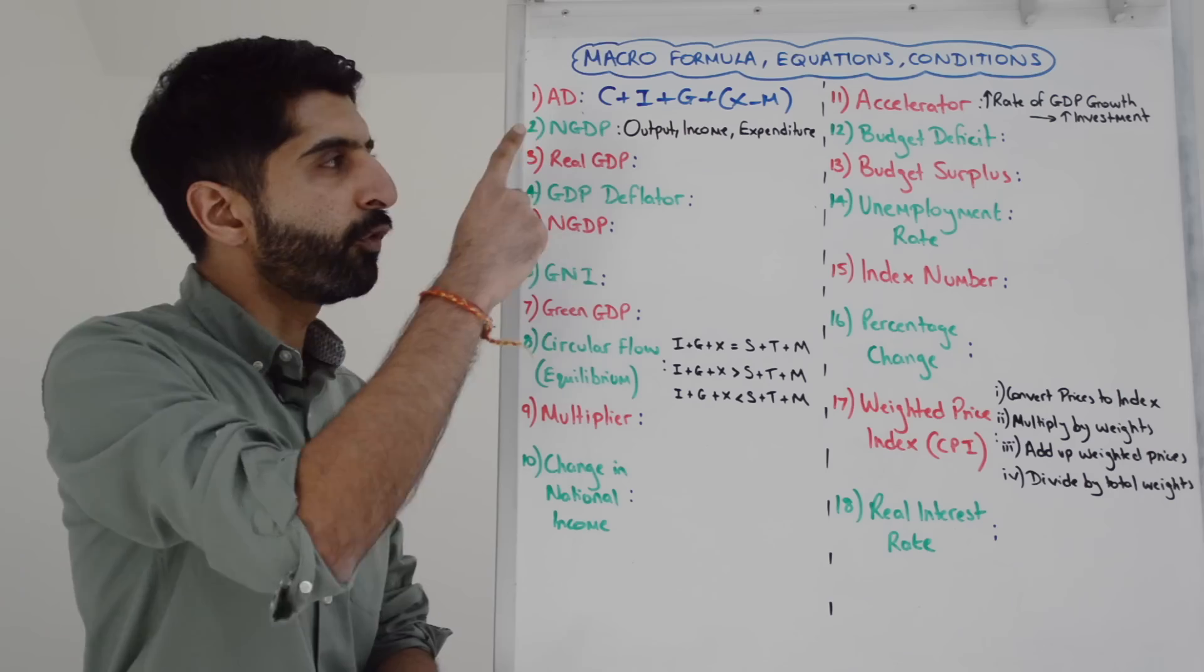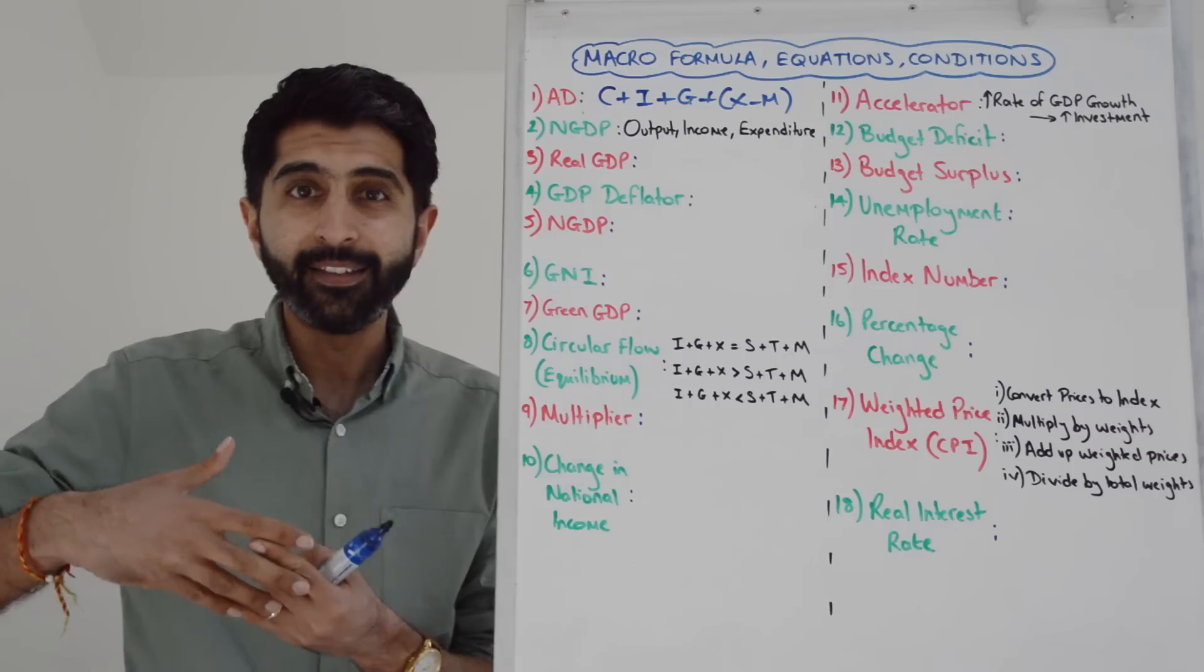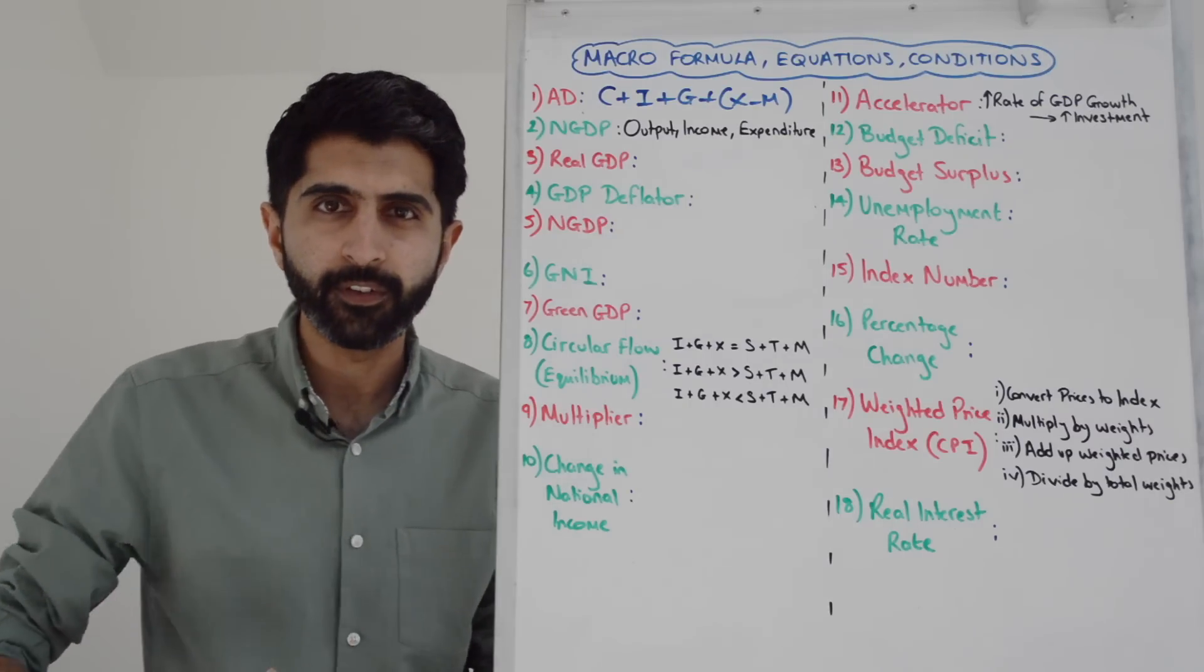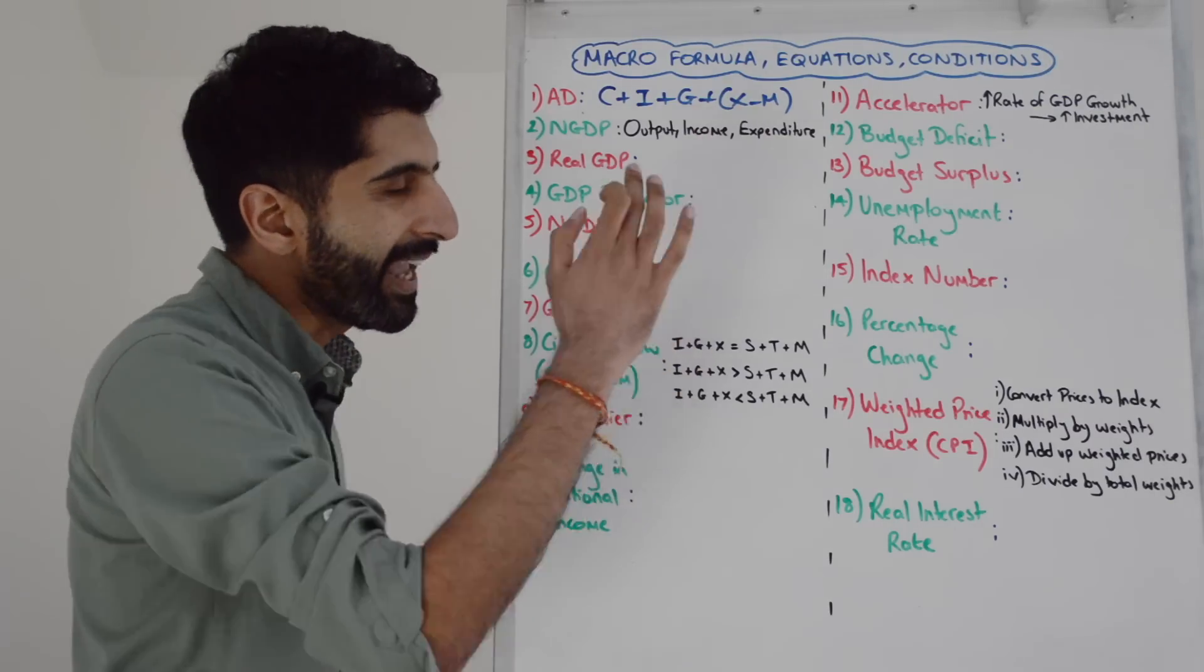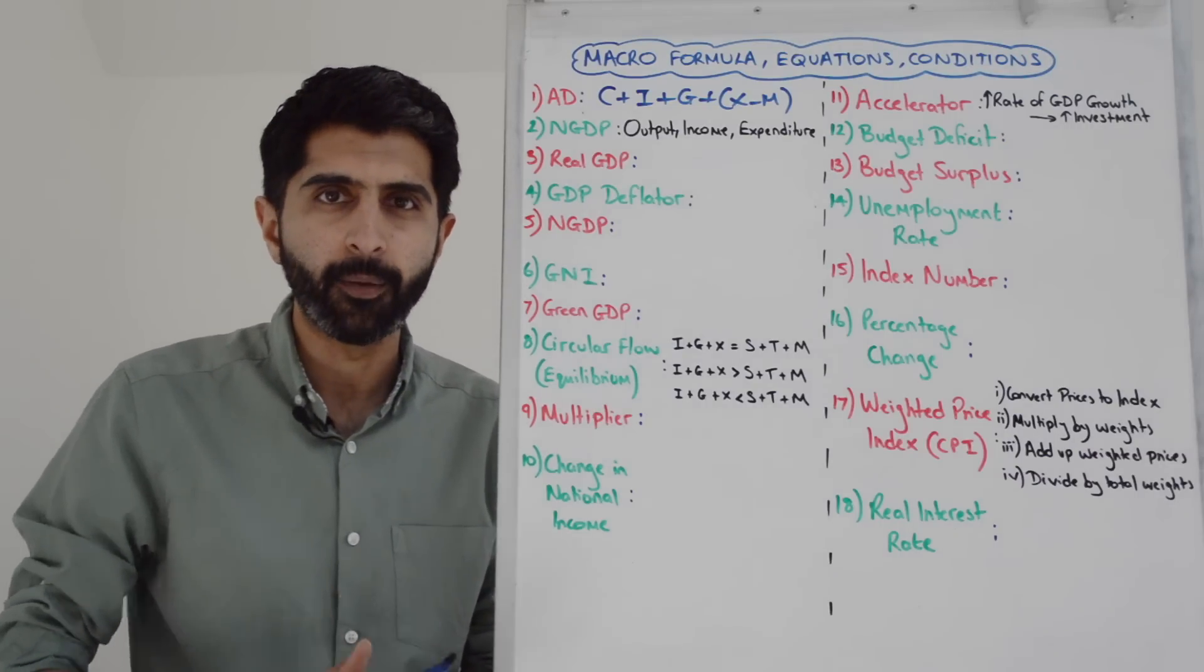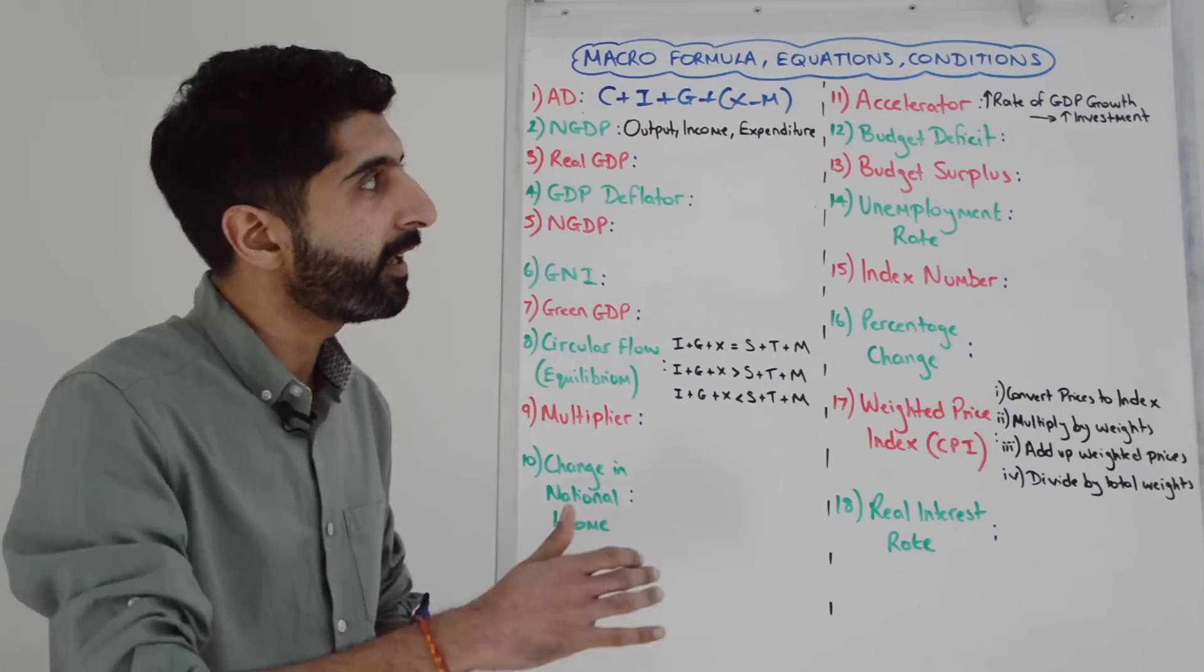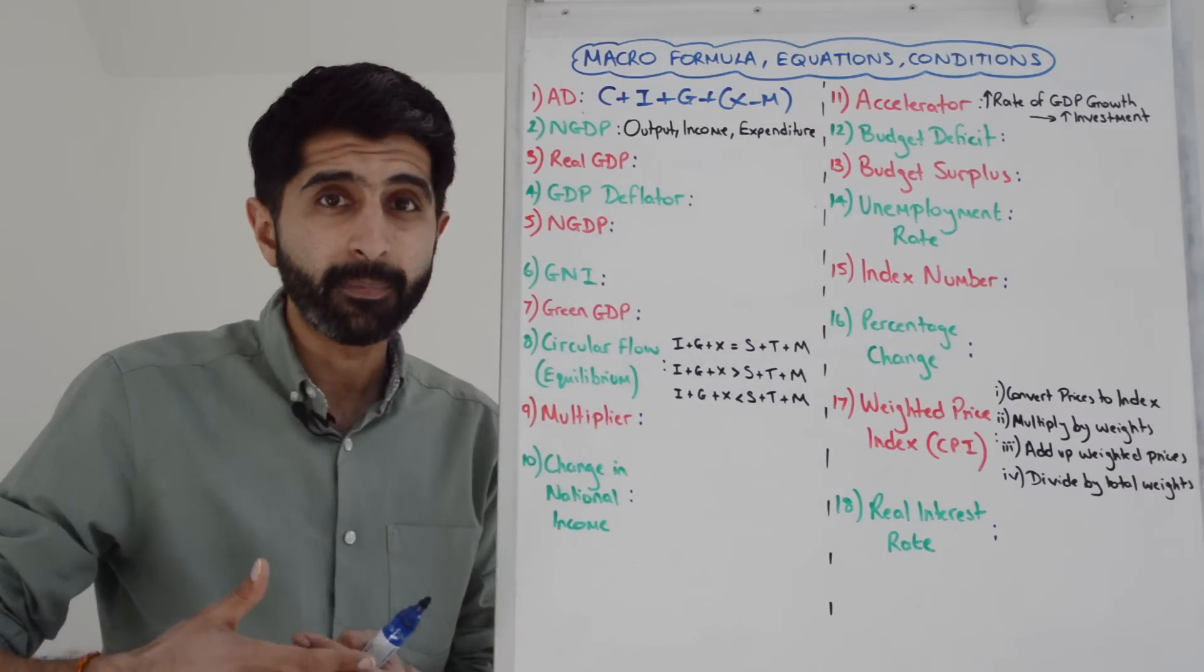Nominal GDP - there are three methods of calculating it. The output method: the final value of all goods and services produced in an economy. The income method: add up all the factor incomes earned in an economy - wages and salaries plus rent plus profit plus interest.